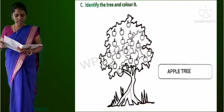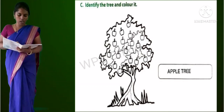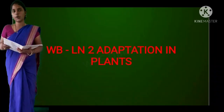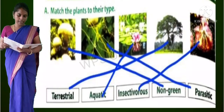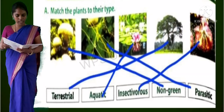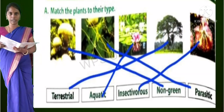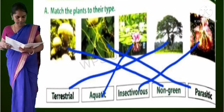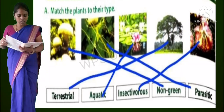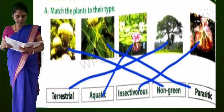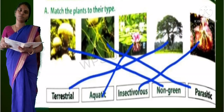Section C: Identify the tree and color it. It is an apple tree. Now lesson number 2 in your workbook: Adaptation in Plants. Section A: Match the plants to their types. First picture is a non-green plant. Second picture is a parasitic plant. Third picture is an aquatic plant. Fourth one is terrestrial, and fifth one is insectivorous.